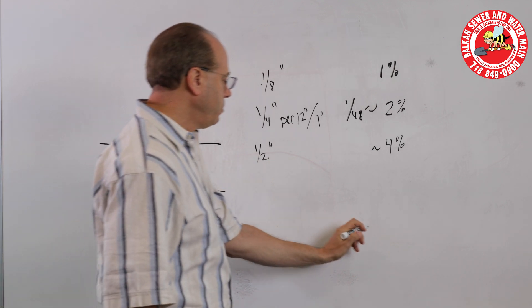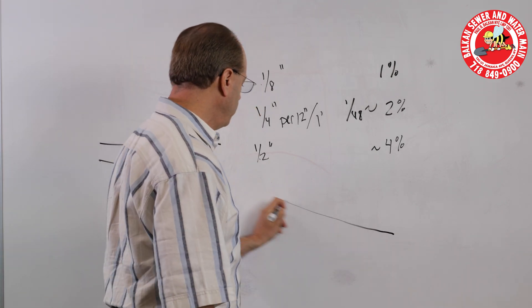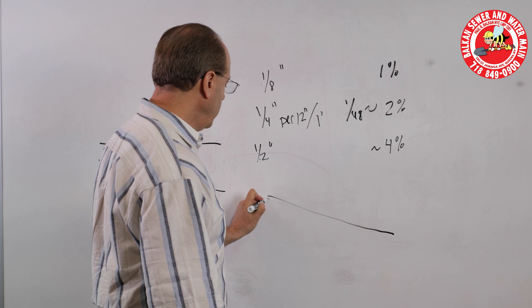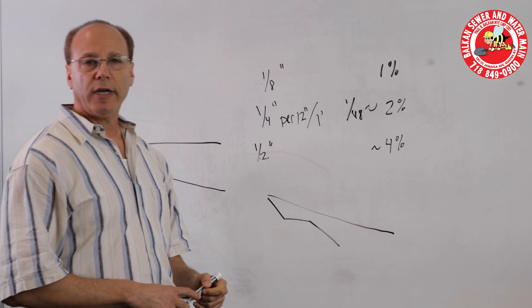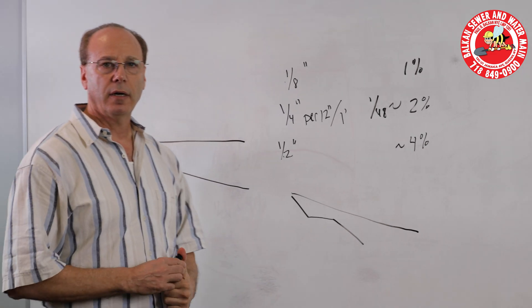You always want the pipe run with uniform pitch. You do not want extreme pitch, then less pitch, then extreme pitch, because the wastewater will not flow at an even pace.